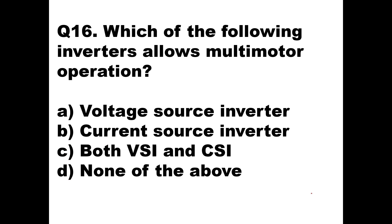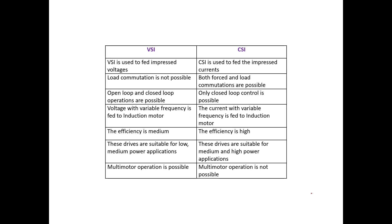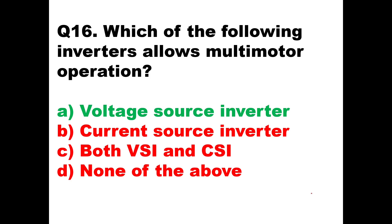Question number sixteen: which inverter allows multi-motor operation — voltage source inverter (VSI), current source inverter (CSI), both, or none? Voltage source inverter is very accurate for controlling many motor operations. Comparing VSI and CSI, multi-motor operation is possible in VSI whereas it is not possible in CSI. So voltage source inverter, VSI, is the answer.